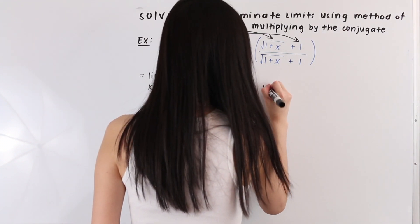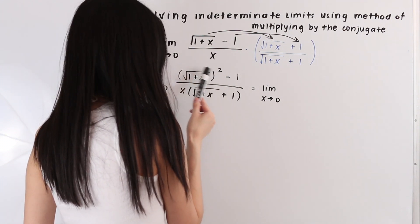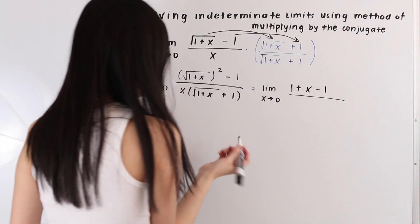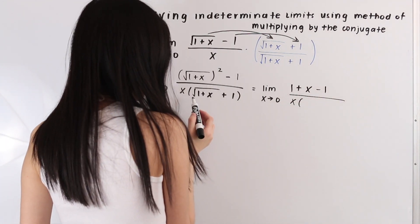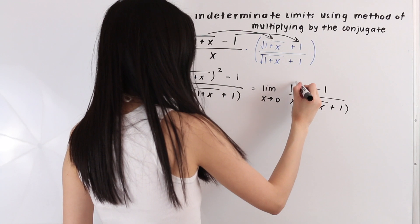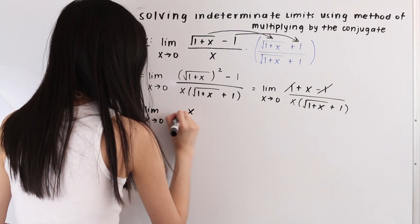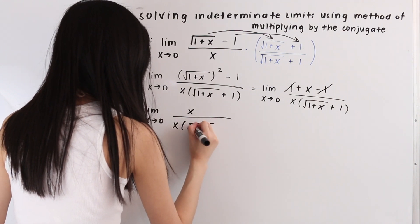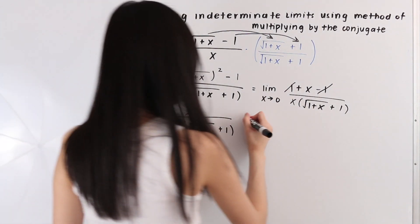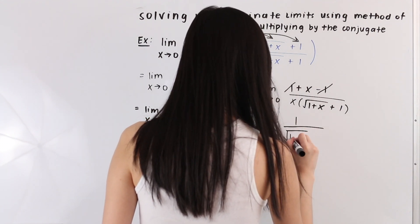Now let's simplify. We have the limit as x approaches 0. In the numerator, the square root of 1 plus x squared means the square root cancels with the square, leaving 1 plus x, minus 1, all over x times the square root of 1 plus x plus 1. The 1 and negative 1 cancel, giving us the limit as x approaches 0 of x over x times the square root of 1 plus x plus 1. The x in the numerator cancels with the x in the denominator, leaving 1 over the square root of 1 plus x plus 1.